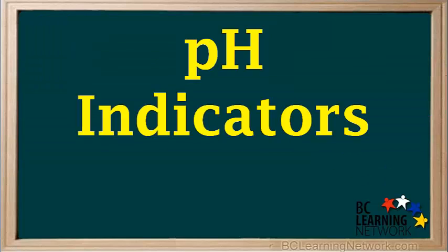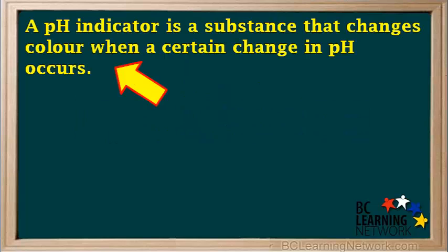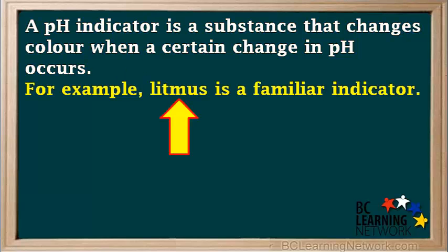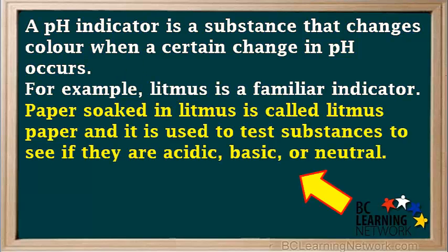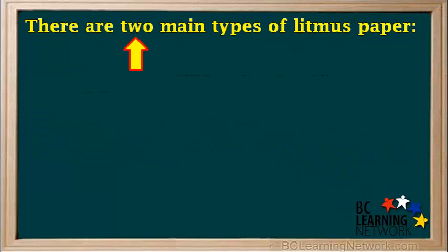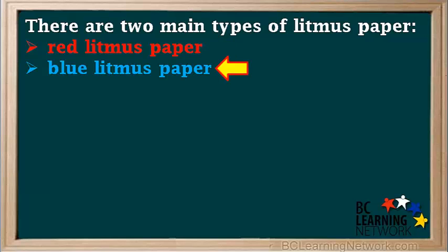Now we'll take a look at pH indicators and find out what they do and how we can use them. A pH indicator is a substance that changes color when a certain change in pH occurs. For example, litmus is a familiar indicator. Paper soaked in litmus is called litmus paper, and it's used to test substances to see if they're acidic, basic, or neutral. There are two main types of litmus paper: red litmus paper and blue litmus paper.